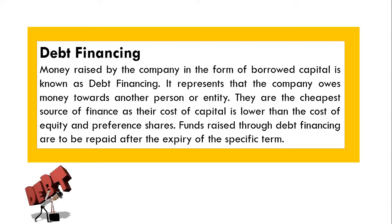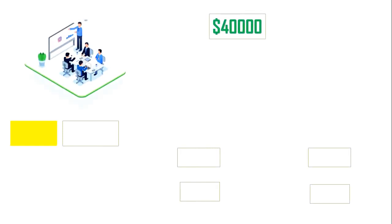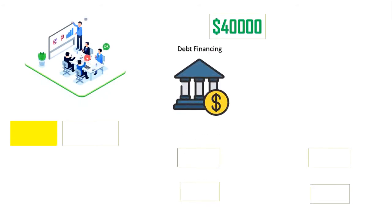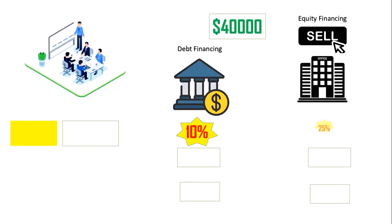Now that we know what debt financing and equity financing are, let's see how they work in the real world. Suppose you run a small business and need $40,000 of financing. You can either take out a $40,000 bank loan at a 10% interest rate, or you can sell a 25% stake in your business to your neighbor for $40,000.